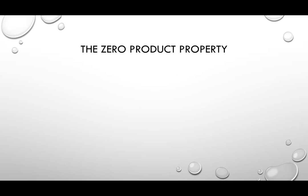So what the zero product property is — if you have two things, let's say A times B, where A is some number and B is some number, and you multiply them together, and you know for a fact that the result is zero, something must be true about one of these numbers. That is that one of them has to be zero. There's no way you can multiply two numbers together and have the answer be zero unless one of those numbers was already zero.